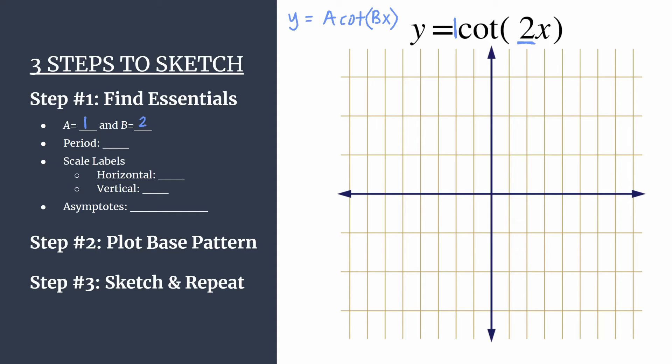So b tells us how many cycles of our graph should happen between 0 and pi. And it also helps us find the period. And we do that taking pi and dividing by b since this is for cotangent. So nice and simple here, the period is going to be pi over 2.